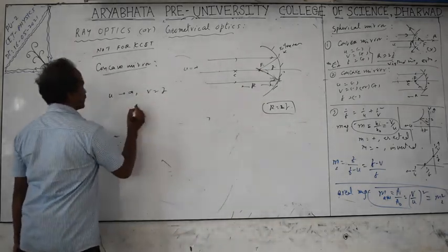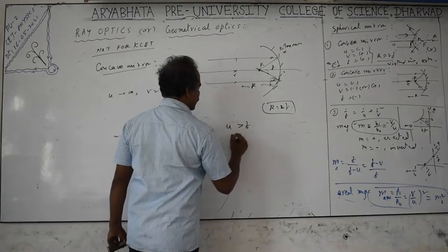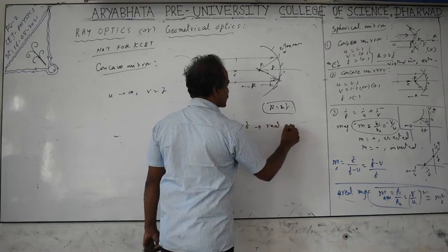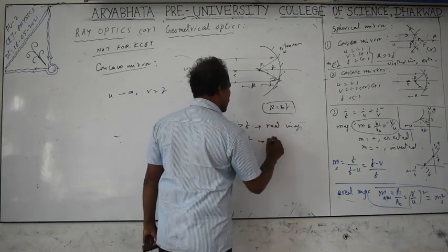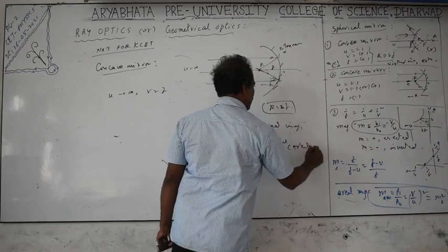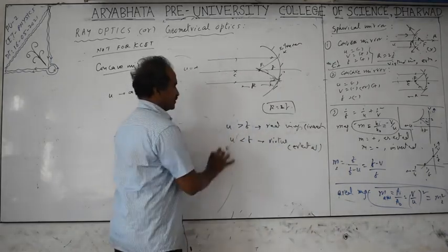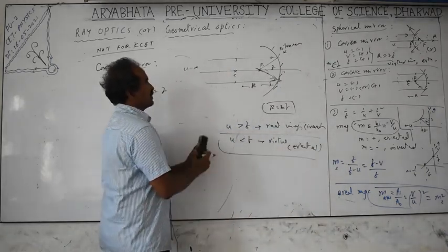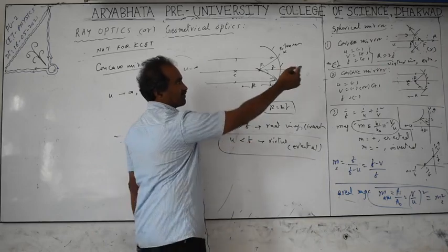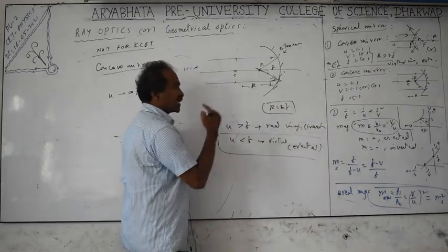For a concave mirror: if u is greater than f, you get real images; if u is less than f, you get virtual images. Virtual images are always erect, and real images are always inverted. Virtual images cannot be obtained on a screen — you cannot place a white screen behind the mirror and get the image there. But virtual images can be seen with the eyes because the diverging rays are converged again on the retina.